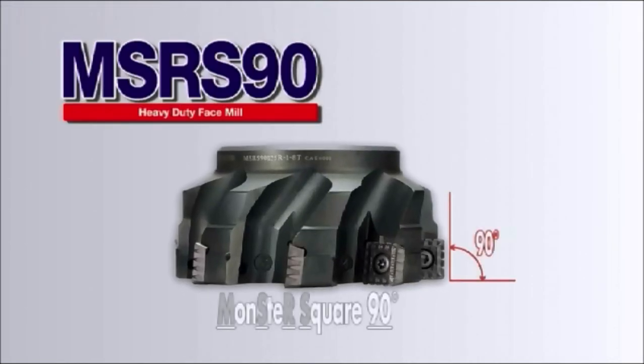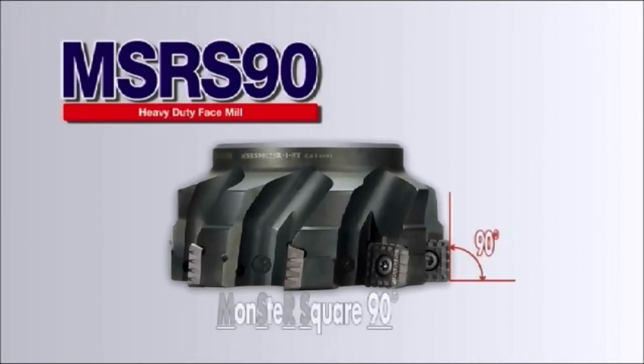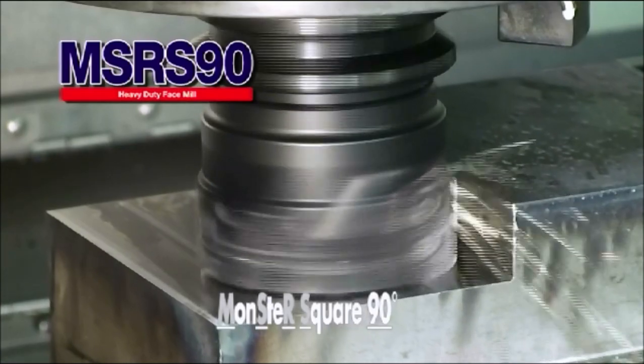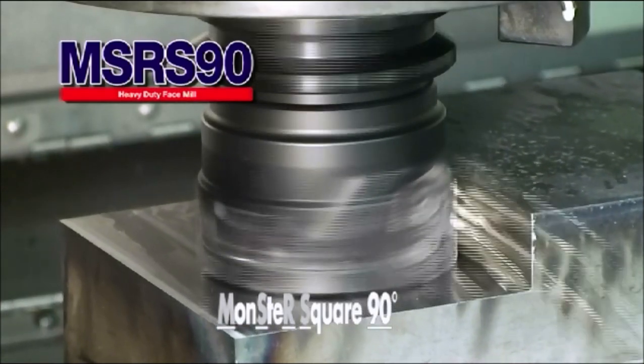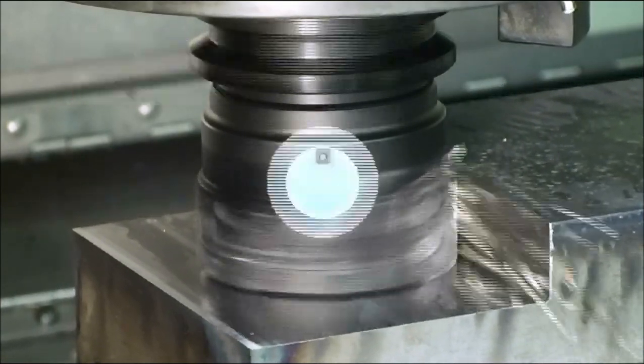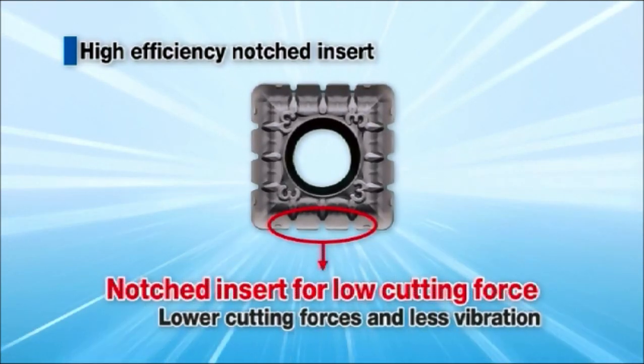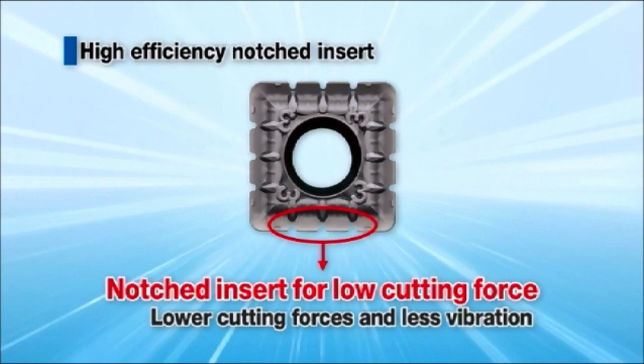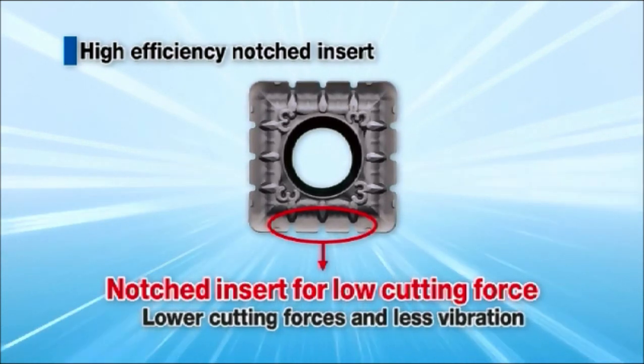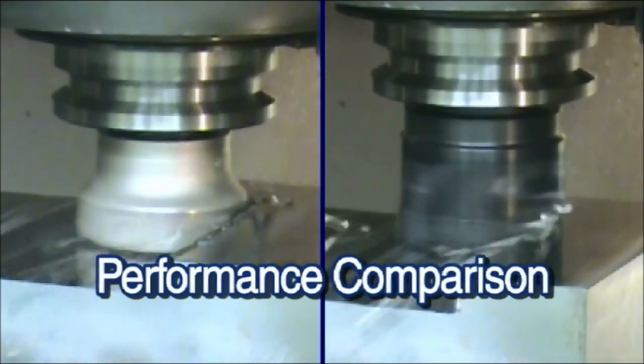Heavy milling revolution: the MSRS90 face mill. The MSRS90 achieves high efficiency milling. Notched inserts reduce the impact load at the entrance of the workpiece, suppress chattering, and produce stable milling. Let's look at the performance.